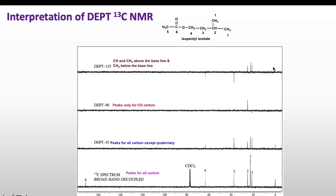So by doing these four stages, we are able to find which carbon is quaternary, which carbon is connected to three protons, which is connected to two protons, and which is connected to only one proton. This information helps us find the structure of organic molecules.